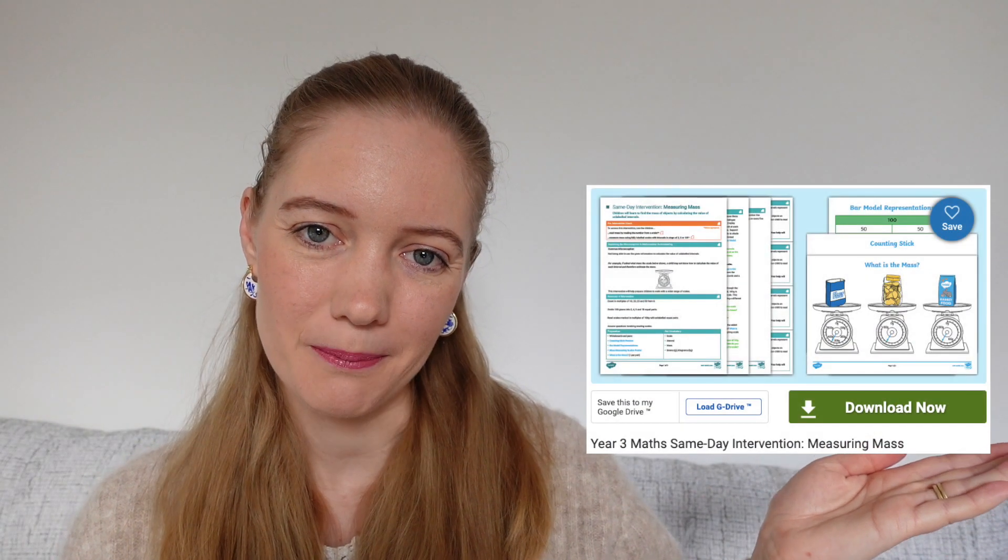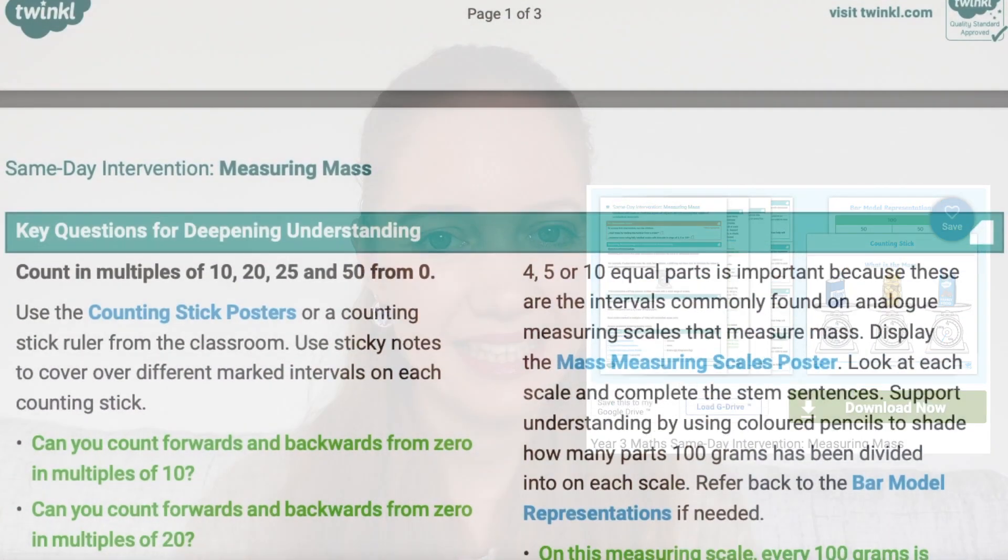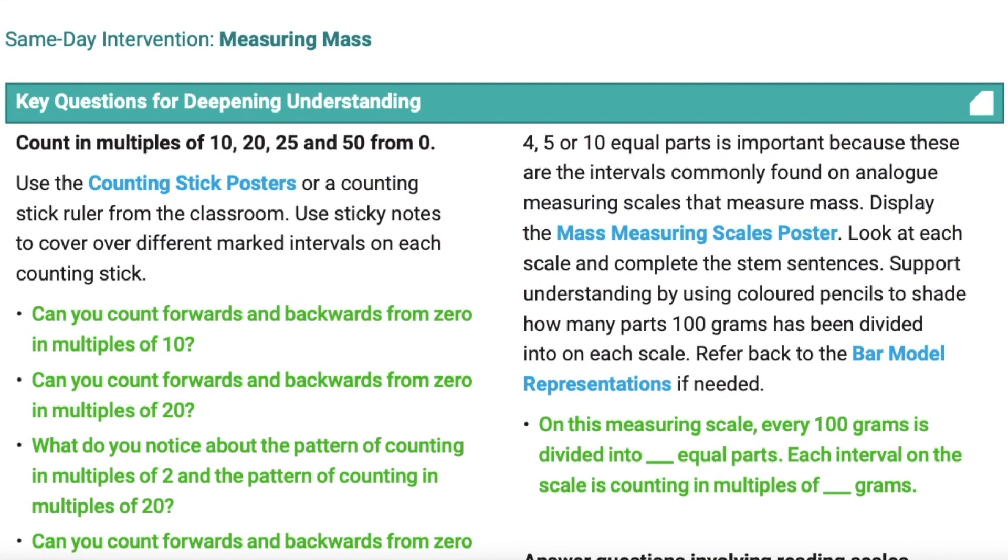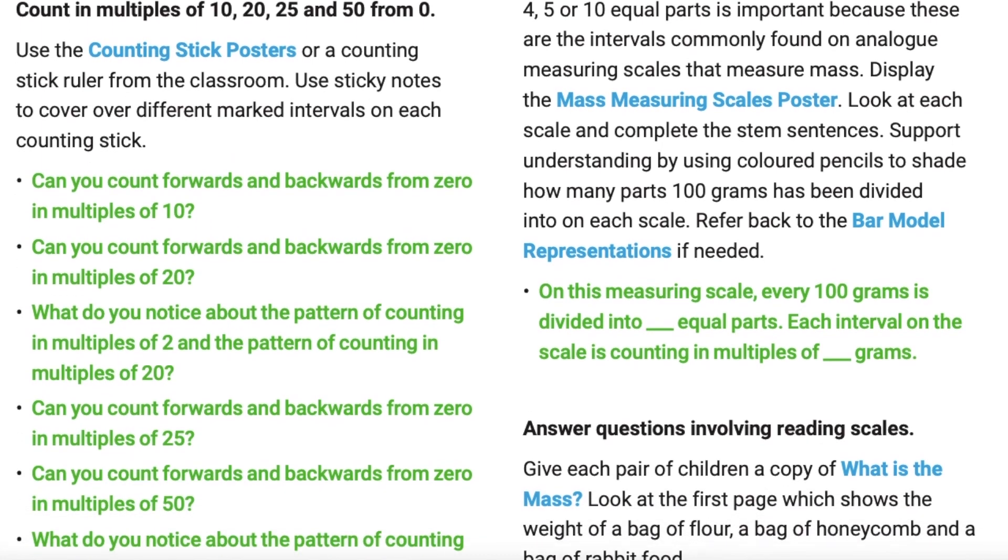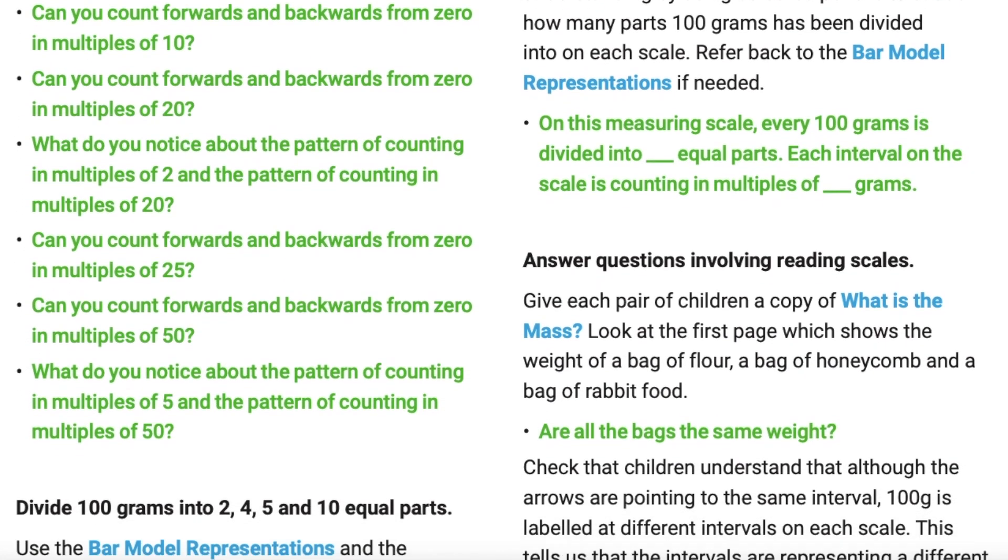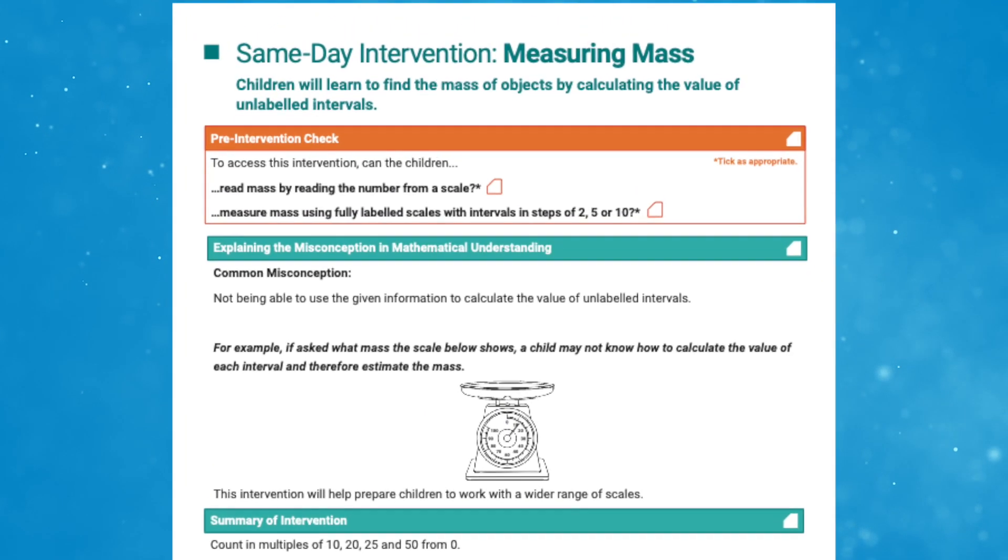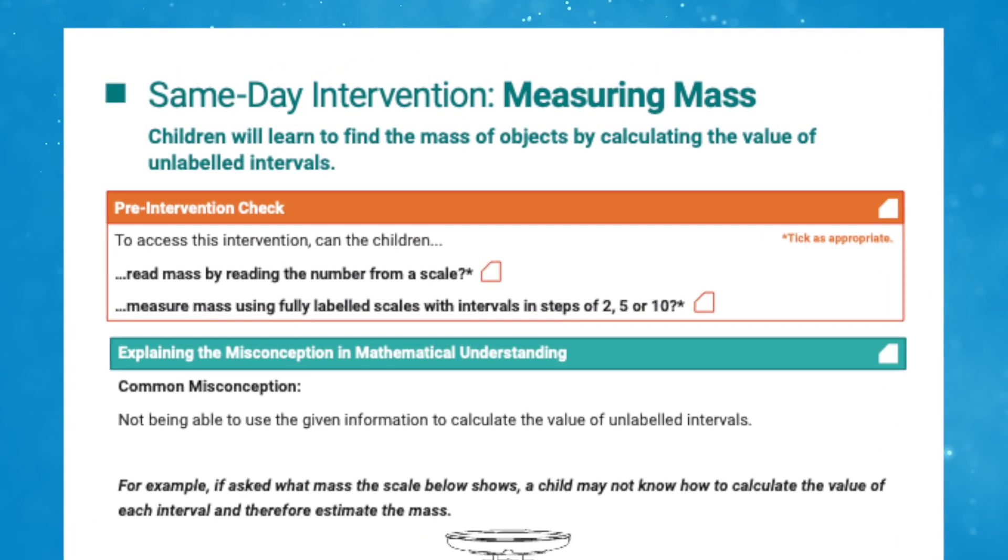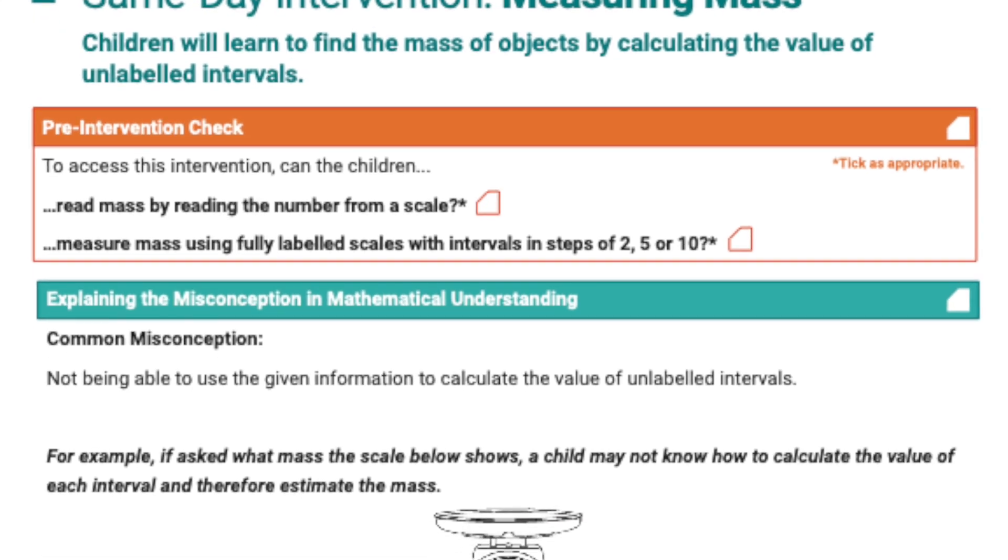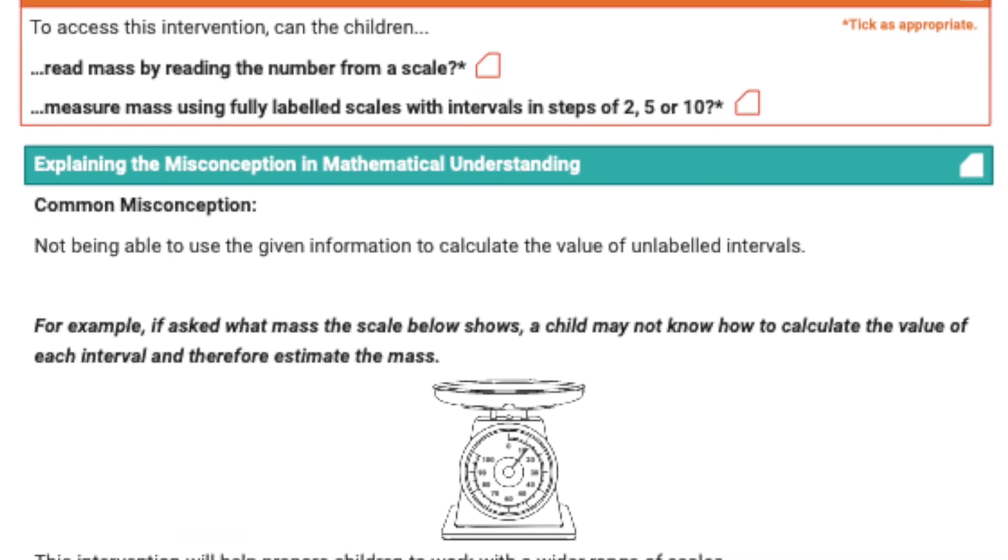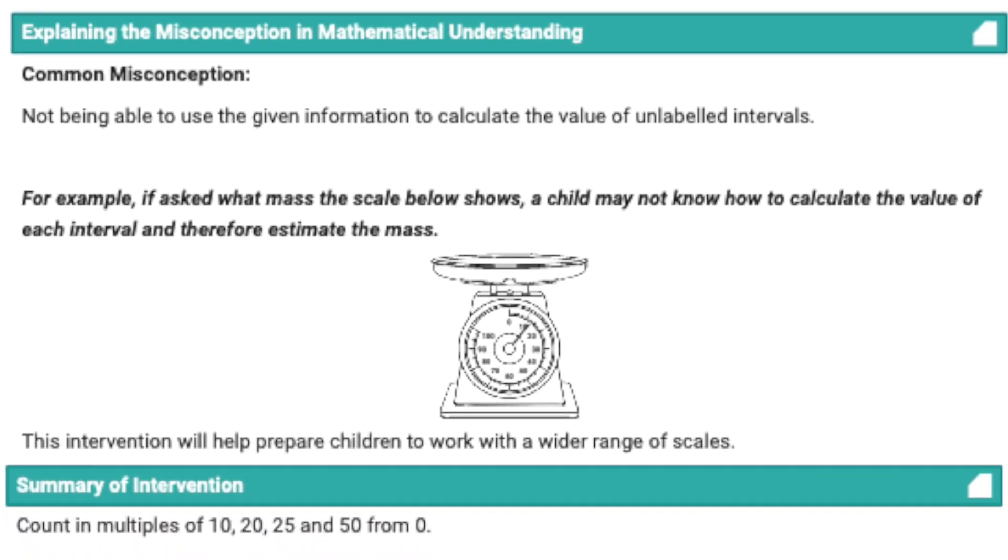Looking at this intervention pack on measuring mass, we can see it contains a detailed plan for the intervention session which can be picked up and used straight away by whichever adult is leading the intervention. This includes a pre-intervention checklist to ensure children have enough foundational knowledge to access the intervention, followed by an explanation of the common misconception which may lead to children struggling when measuring mass.